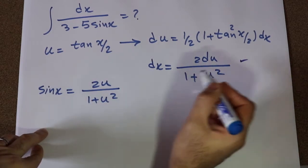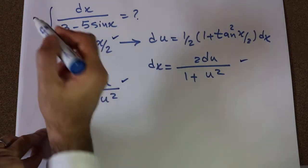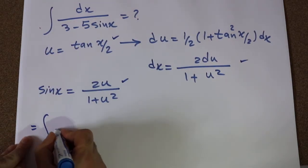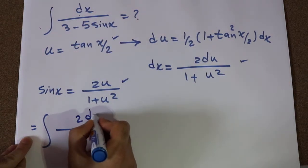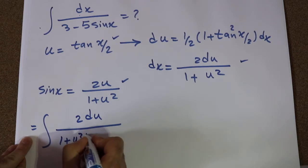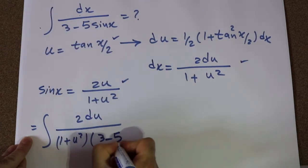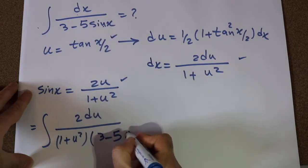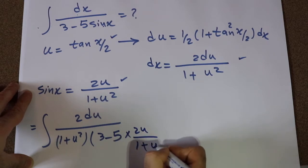Now you need to substitute these three expressions into the integral. Therefore, you can rewrite this integral as: instead of dx, write 2 du divided by 1 plus u², times 3 minus 5, and instead of sine x, write 2u divided by 1 plus u².